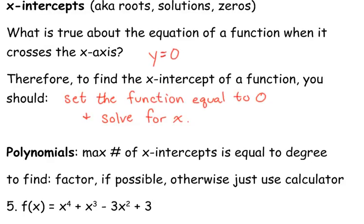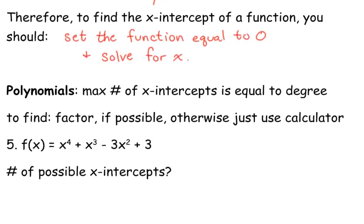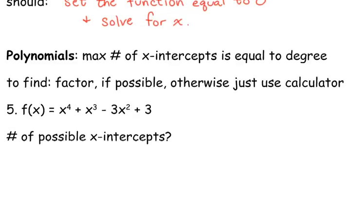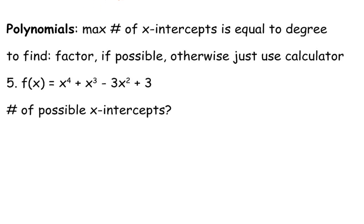So to find these x-intercepts, if possible, you want to factor. If you can't factor it, then you just want to use your calculator to find them. So let's look at number five. To begin with, we have x to the fourth plus x-cubed minus three x-squared plus three. This is a fourth degree polynomial, so the number of possible x-intercepts is four. Now if we were to attempt to factor this, what type of factoring would we attempt to do? Grouping.